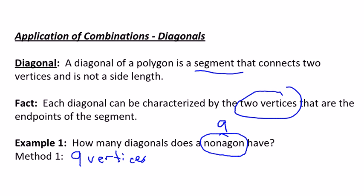So, if we think of each diagonal as just connecting two vertices, then it seems pretty logical to consider nine choose two. How many ways can I pick those two vertices to get my diagonals? And so in this case, nine choose two is nine times eight, divided by two times one, which just is thirty-six.